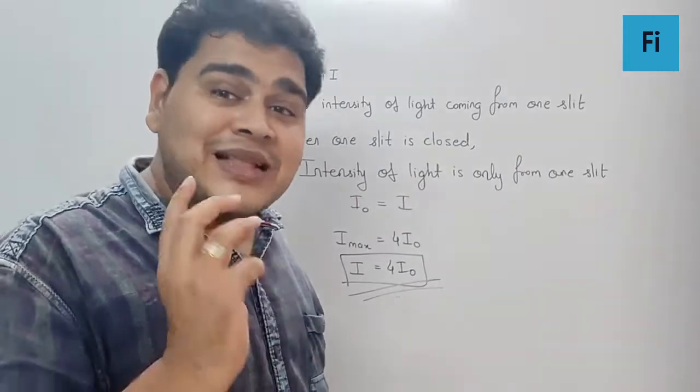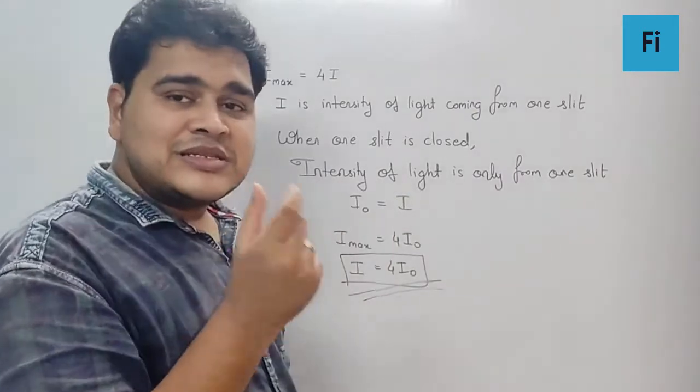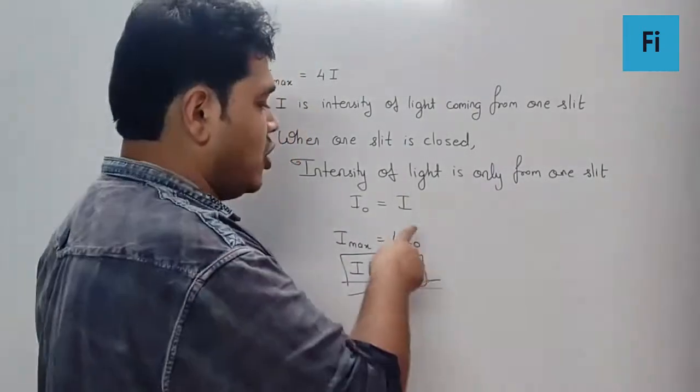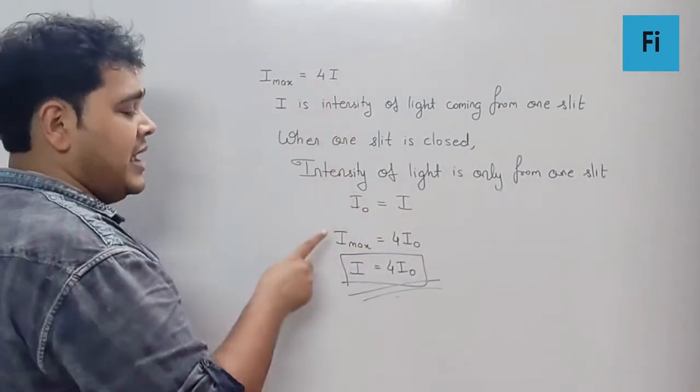which is nothing but the I which we have used. So definitely I₀, which is the single light intensity, I can call it as I itself. And that means the I_max, which is 4I, I can write it as I_max equal to 4I₀.